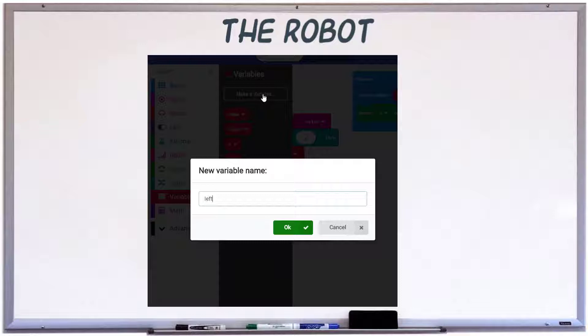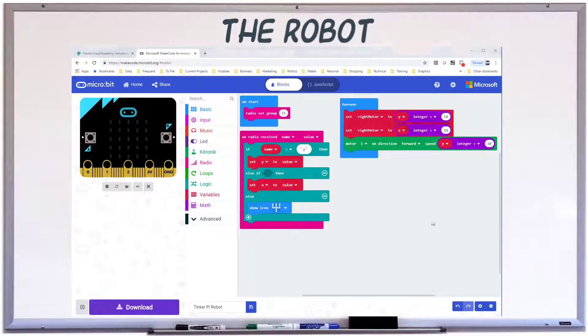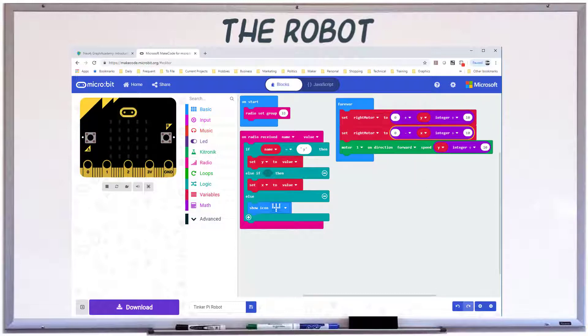We'll need two variables to hold the speed of the motors. Create a variable called left motor and one called right motor. Next, set the blocks up to populate the variables using our formulas.